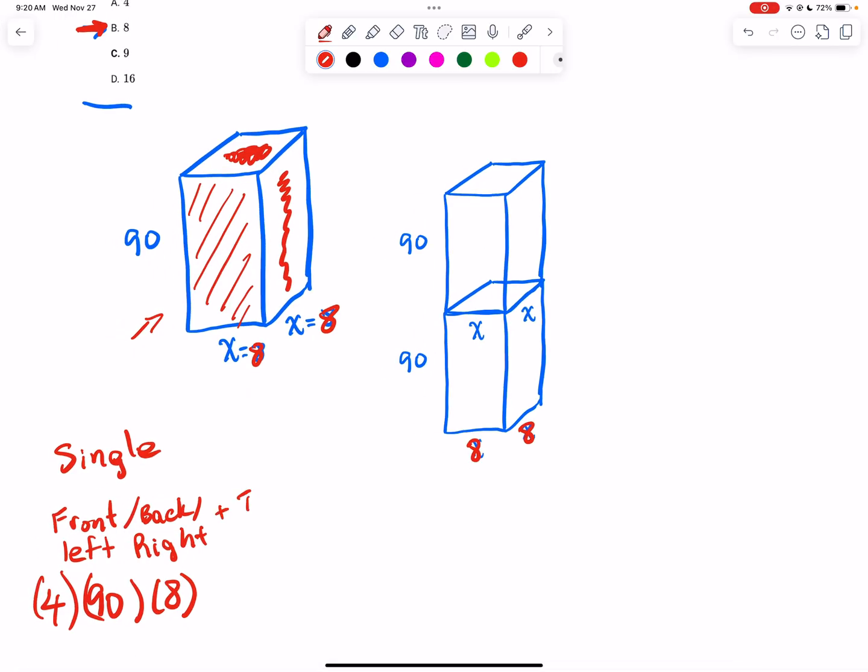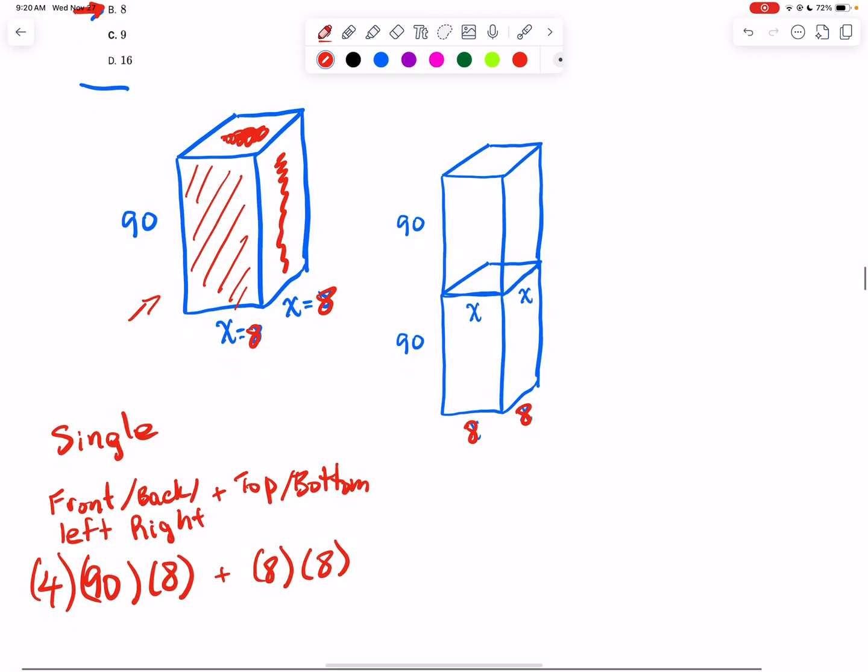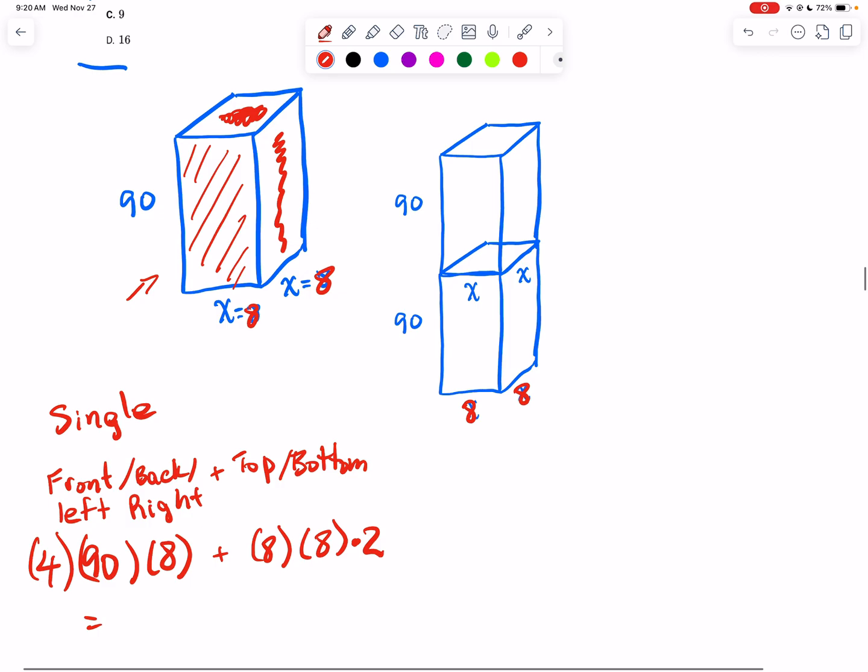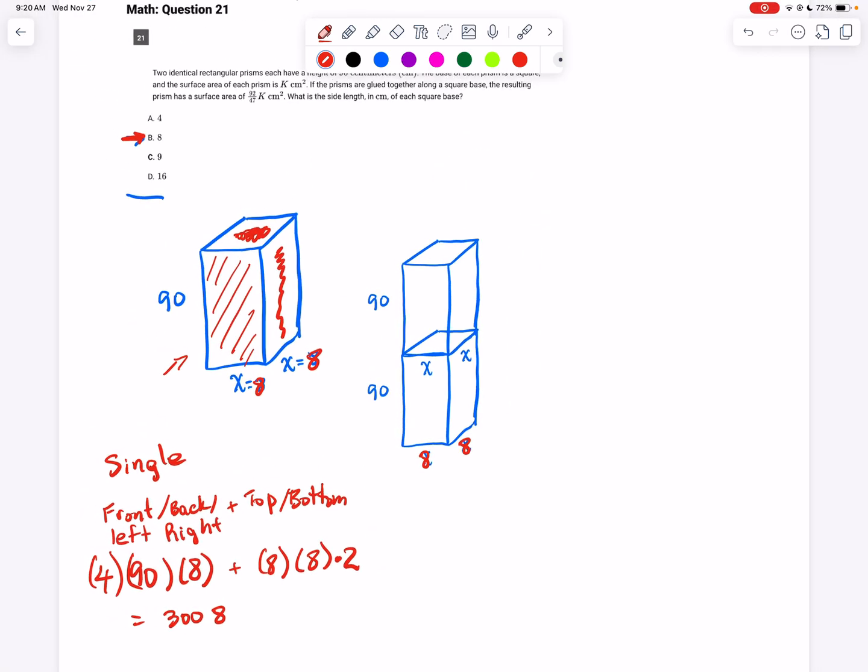In order to get the area of the top and the bottom, we're going to add that. The area of the top and the bottom is 8 multiplied by 8, and there's two of them - don't forget to multiply by 2. When we work through all of that, put that in our calculator, we get that the surface area is 3,008.